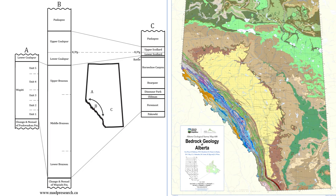Here's the figure that we did for the website. You can see that the Briseau Formation is equivalent to the Wapiti Formation in the northwest of Alberta, and also equivalent to the Foremost, the Old Man, the Dinosaur Park, Bearpaw, Horseshoe Canyon, and the Battle Formations in the prairies of Alberta. Underlying the Wapiti, the Briseau, and the Foremost are marine sediments — all Western Interior Seaway sediments from when it was quite high.